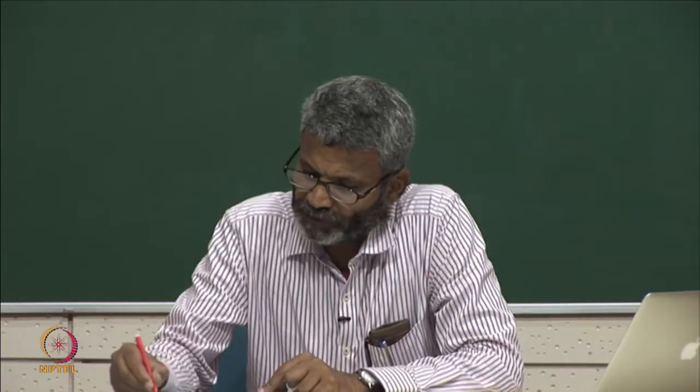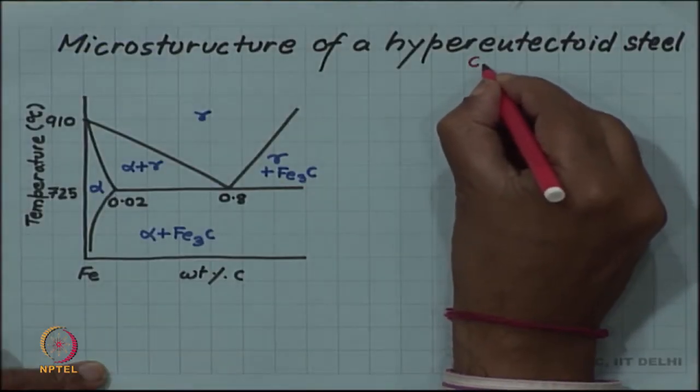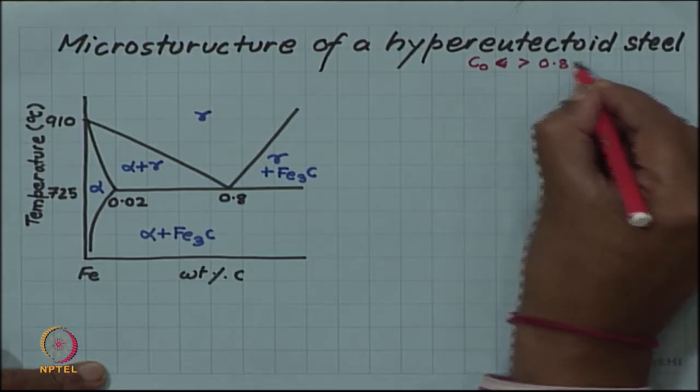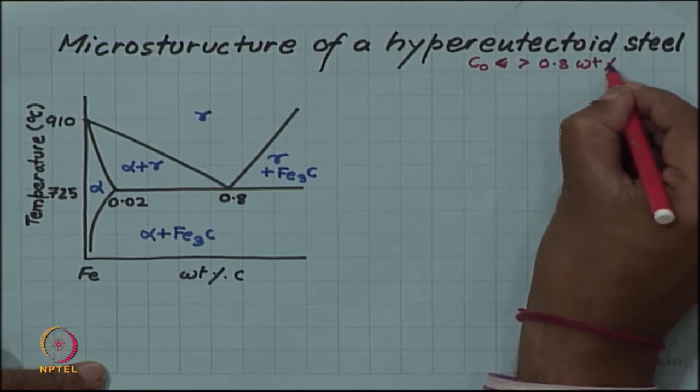Let us now look at microstructure of a hypereutectoid steel. Hypereutectoid means the alloy composition is greater than 0.8 weight percent carbon.